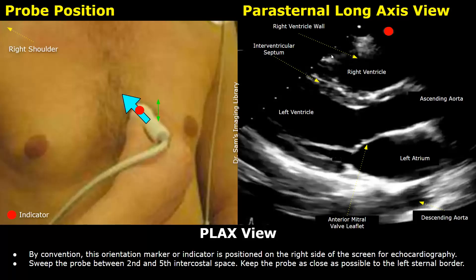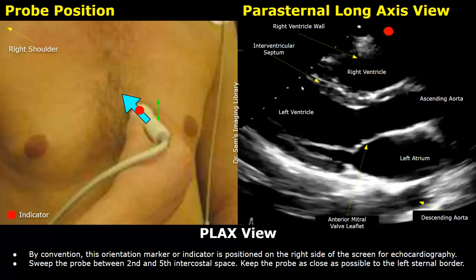This is the parasternal long axis view of the heart. Starting from the top of the image, this anechoic chamber is the right ventricle — the anterior-most chamber, which is why we see it first. After the right ventricle, we find a thick echogenic wall: the interventricular septum, present between the right and left ventricle. Behind the septum is a larger anechoic chamber — the left ventricle, which is larger than the right ventricle.